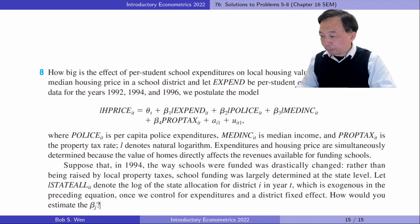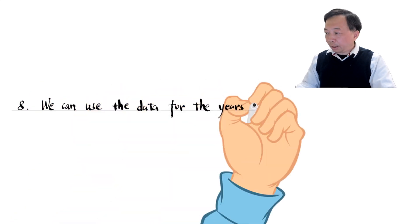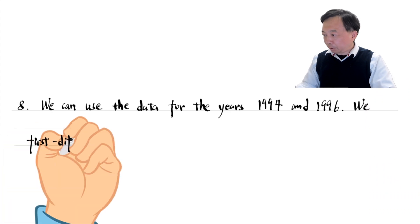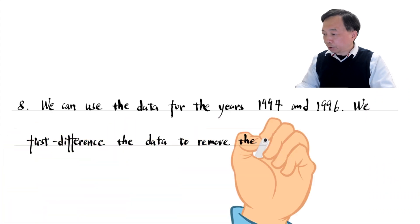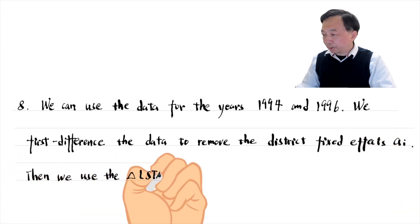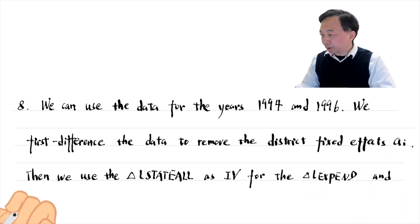How would you estimate the betas? We can use the data for the years 1994 and 1996. We first difference the model to remove the district fixed effects. Then we use the log state allocation as an instrumental variable for the per-student expenditures and employ the two-stage least squares estimation.